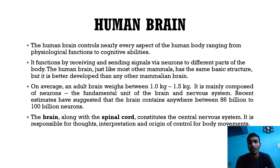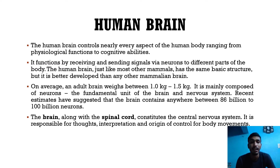The brain is mainly composed of neurons, the fundamental unit of the brain and the nervous system. Recent estimates suggest the brain contains anywhere between 36 billion to 100 billion neurons. The brain, along with the spinal cord, constitutes the central nervous system. It is responsible for thoughts, interpretations, and the origin of control for body movements.